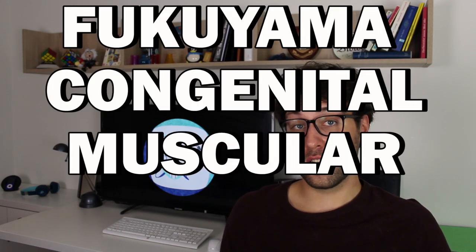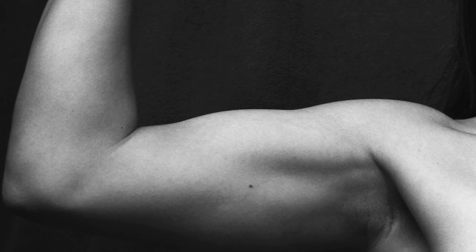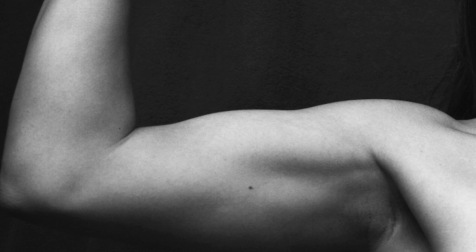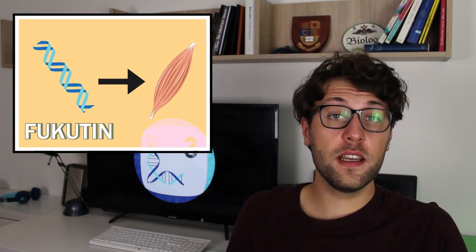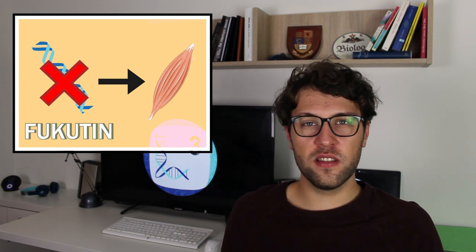Transposons also cause trouble on larger scales. In Japan, there's a widely known genetic disorder with an easy name: it's called Fukuyama congenital muscular dystrophy. This disease primarily affects the brain or eyes and leads to an overall dramatic reduction in muscle strength. Fukuyama congenital muscular dystrophy is caused by mutations in a gene called Fukutin. As you can imagine, Fukutin is involved in the intactness of muscle cells. In this disease, it is frequently found that transposons mess with the activity of this gene. Okay, so transposons can be very harmful to us.